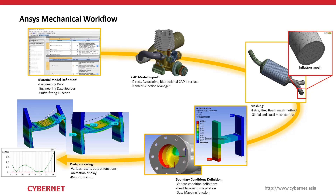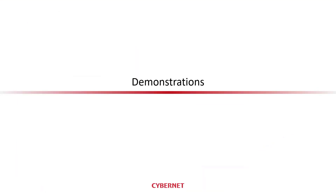After meshing, define your boundary conditions — loads, supports, and so on — then run the solver. In the post-processing stage you can evaluate color contours such as stress or deformation contours, animate the results, and automatically generate a report of the analysis that can be exported as a Word document.